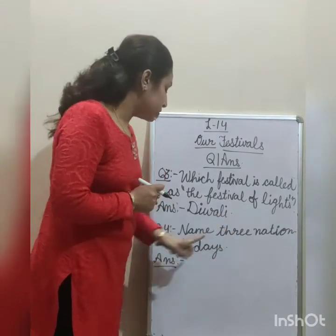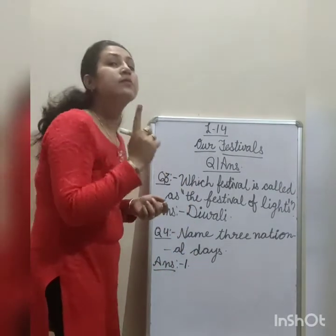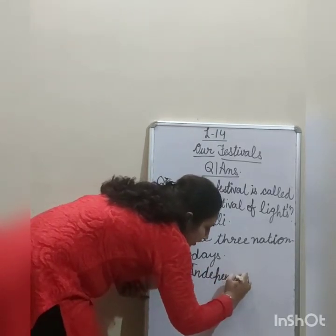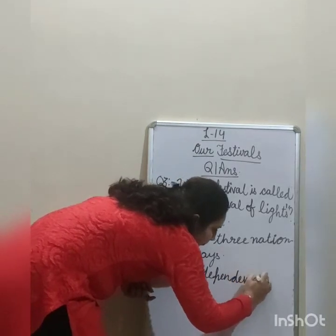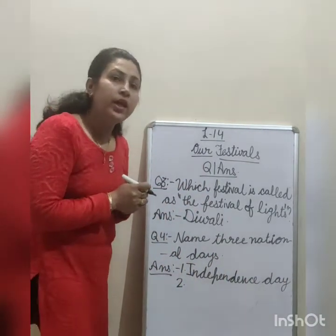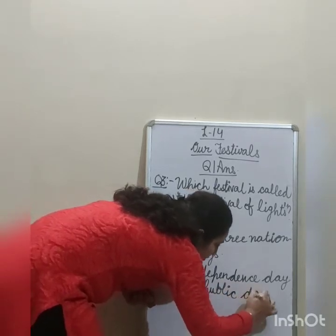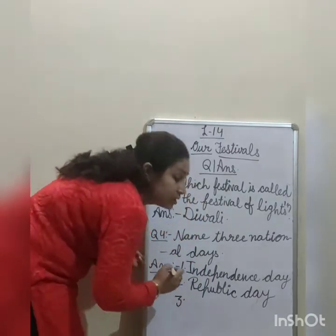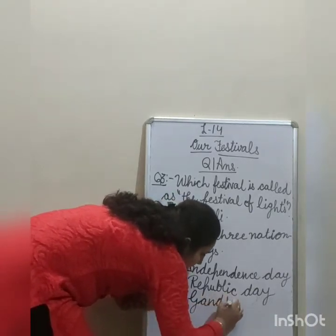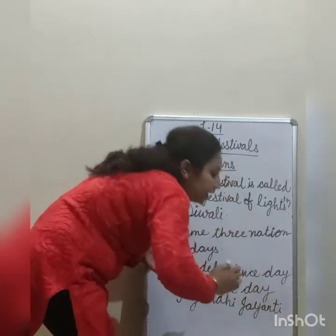Name three national days. Teen national days ke name batane hai. First is Independence Day, next is Republic Day, and next is Gandhi Jayanti. G-A-N-D-H-I J-A-Y-A-N-T-I, Gandhi Jayanti. Okay.